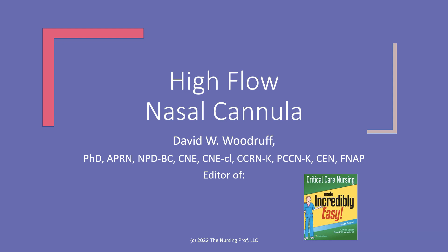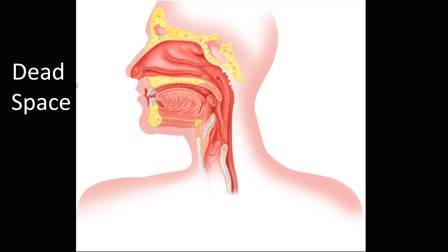Let's talk about high flow nasal cannula. To understand why it's important, we need to look at our anatomy. When you look at the nasal pharynx and the oral pharynx, you can see there is an area that is kind of open — we call that dead space. Air goes into this area in the nasal cavity and the back of the throat and the mouth, and it kind of sits there. So not every bit of air you're inhaling is going directly into the lungs.